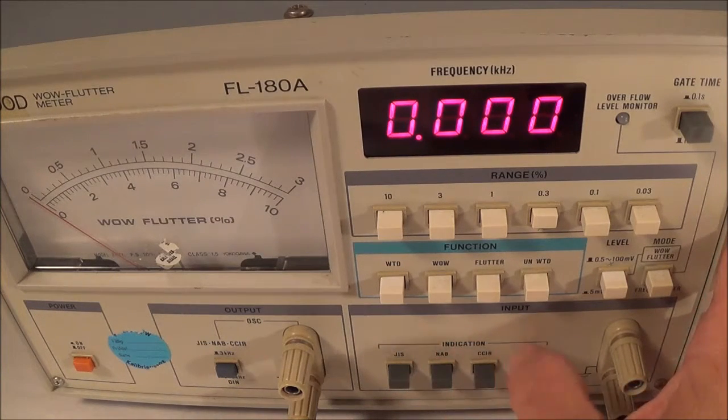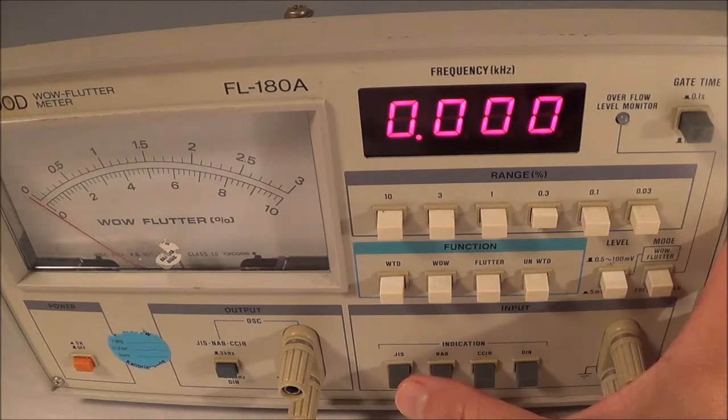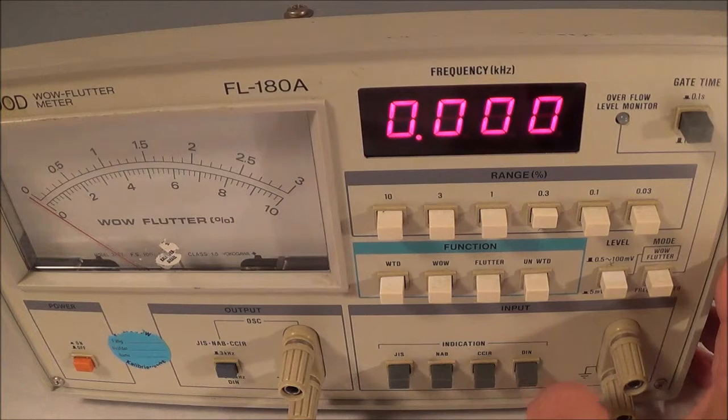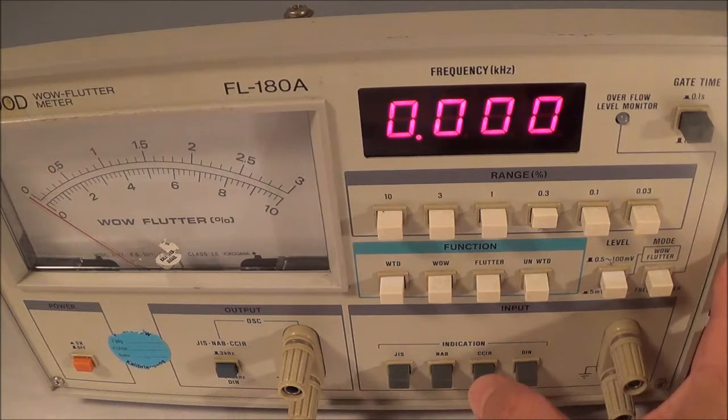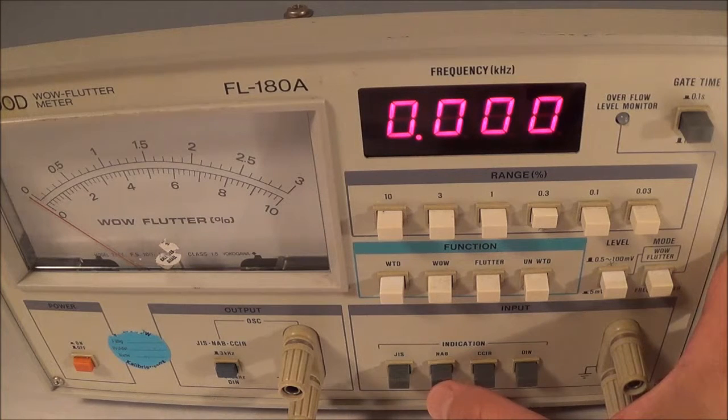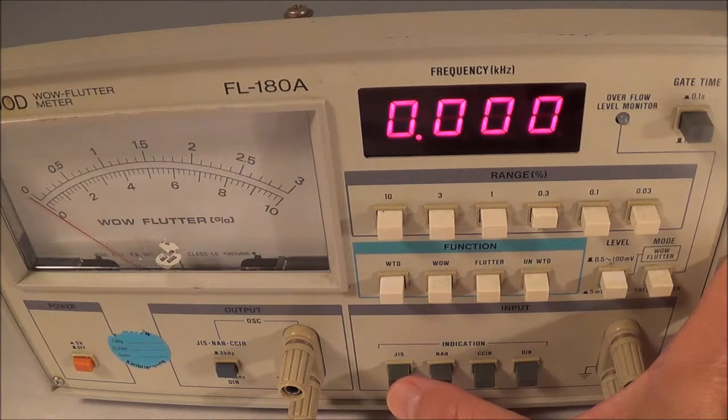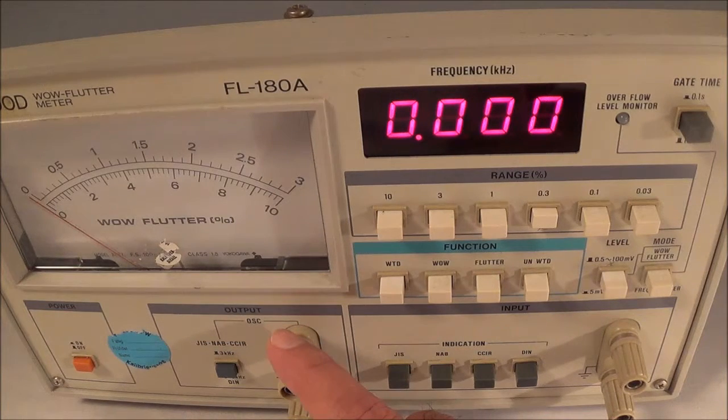Down here you have the indication, which means you can set the meter up for the four primary standards. You got your DIN standard that uses 3150 hertz, then you have the CCIR, that's a French standard that uses 3000 hertz. You got your NAB standard, as far as I remember I think it's the United States standard that uses 3000 hertz, and the JAS standard that also uses 3000 hertz.